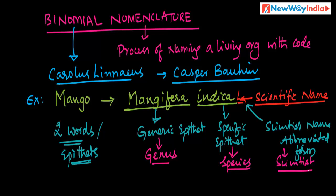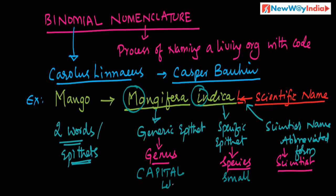So: genus, species, scientist. Mangifera is the generic epithet and also called genus. Indica is the specific epithet and also called species. Notice that Mangifera starts with a capital letter, while indica starts with a small letter. Genus name is capital; species name is small letter.